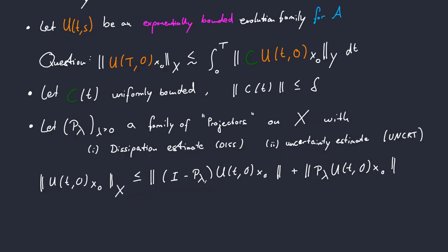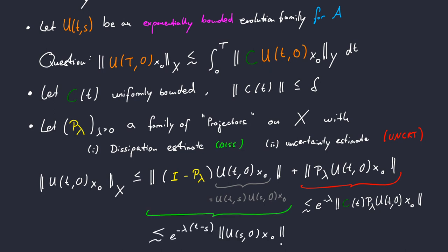Both these estimates come into play once you prefix our evolution family with I minus P_lambda plus P_lambda. The summand on the right can be estimated using the uncertainty estimate. It introduces a pre-factor e to the minus lambda and also the operator C inside the norm. For the summand on the left, we introduce first with a little trick using the algebraic property of our evolution family an intermediate point of time laying between T and zero. Then the dissipation estimate comes into play in order to estimate I minus P_lambda U(t,s) with this exponential decay factor and the rest remains inside the norm.